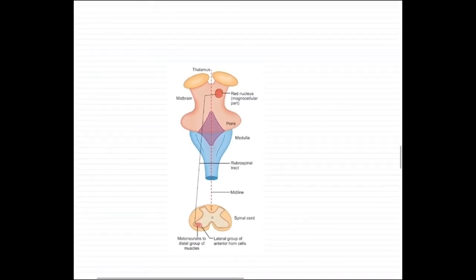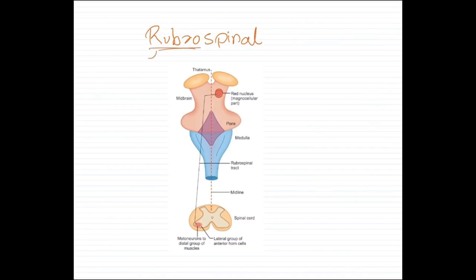The first extrapyramidal tract is the rubrospinal tract. In extrapyramidal tracts, the name gives us a lot of information. For example, 'rubro' means red — therefore this tract originates in the red nucleus, which is located in the midbrain. The red nucleus receives nerve fibers from the corticospinal tract and the primary motor cortex, which go specifically to the lower part of the red nucleus forming the magnocellular part.